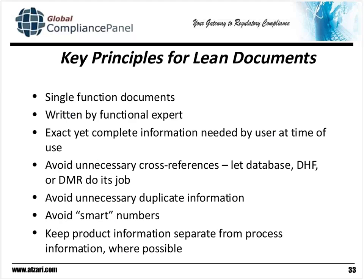If we look at the key principles of lean documents, we would like a single-function document written by an expert in that function — a subject matter expert. We want the exact yet complete information that the user needs at the time. We want to avoid unnecessary cross-references, and that brings us to what we're going to talk about. The device master record, the design history file — that's what it's there for. It's there to tell you where these documents are located.